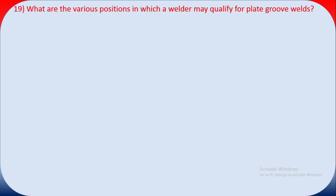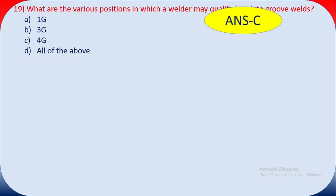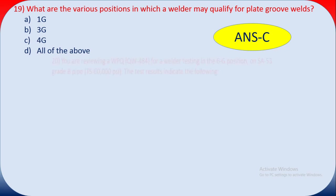Question nineteen: what are the various positions in which a welder may be qualified for plate groove welds? Options: A 1G, B 3G, C 4G, D all of the above. The answer is C — the 4G position qualifies the welder for plate groove welds.